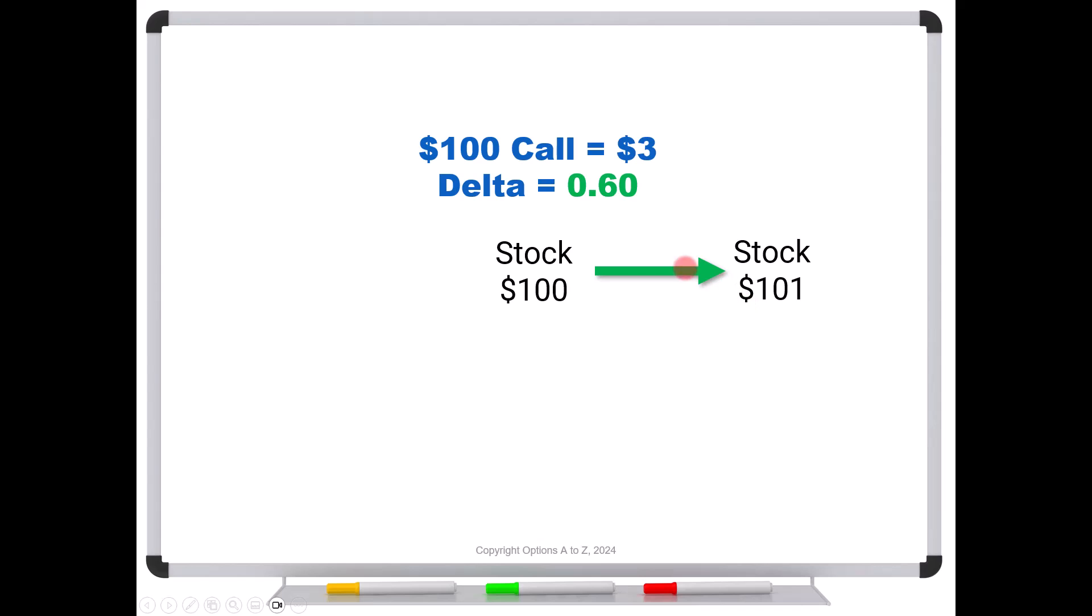So let's say that the stock rises from 100 to 101. Well, we would expect that this option will pick up 60 cents. And therefore, we would expect that call to be trading for about $3.60.